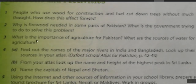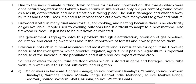Question number three: What is the importance of agriculture for Pakistan? What are the sources of water for agriculture? The answer of question number three is: Pakistan is not rich in mineral resources and most of its land is not suitable for agriculture. However, because of the river system which provides irrigation, agriculture is possible.